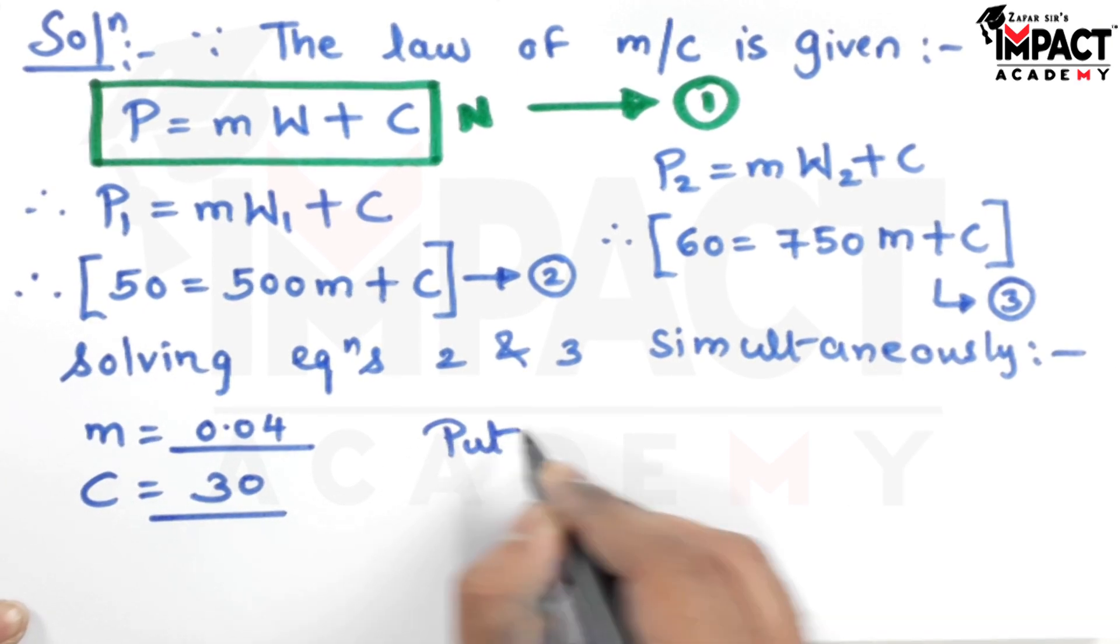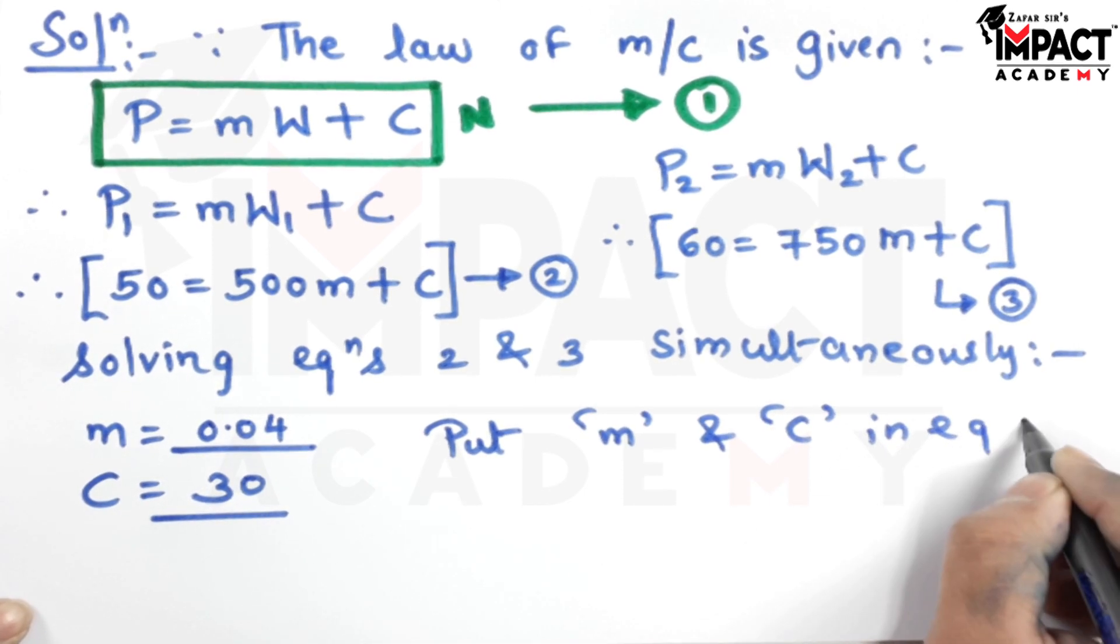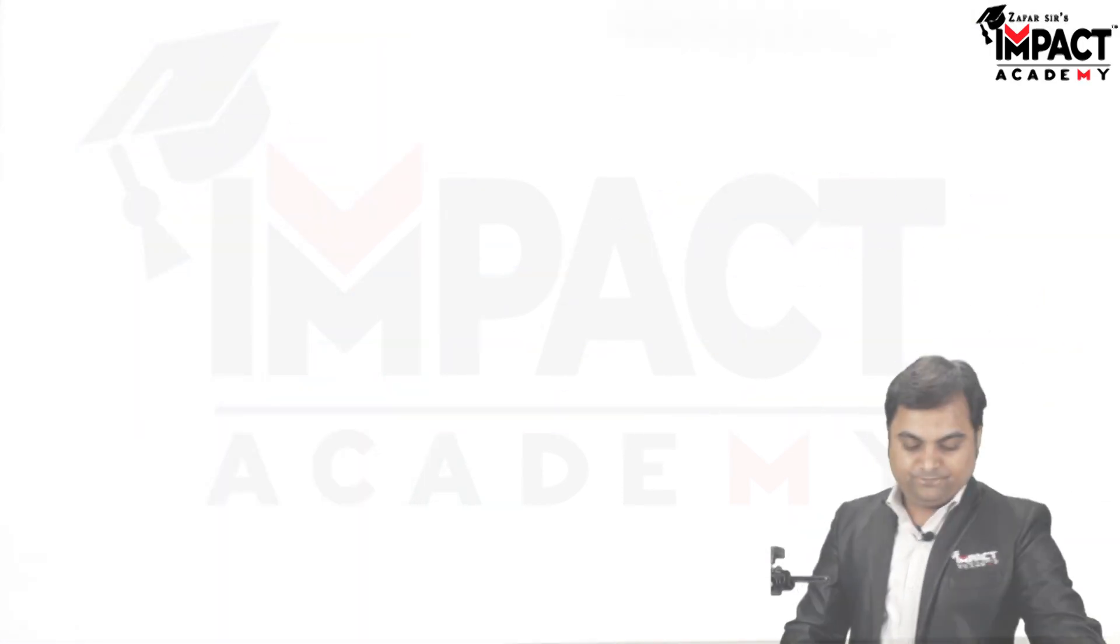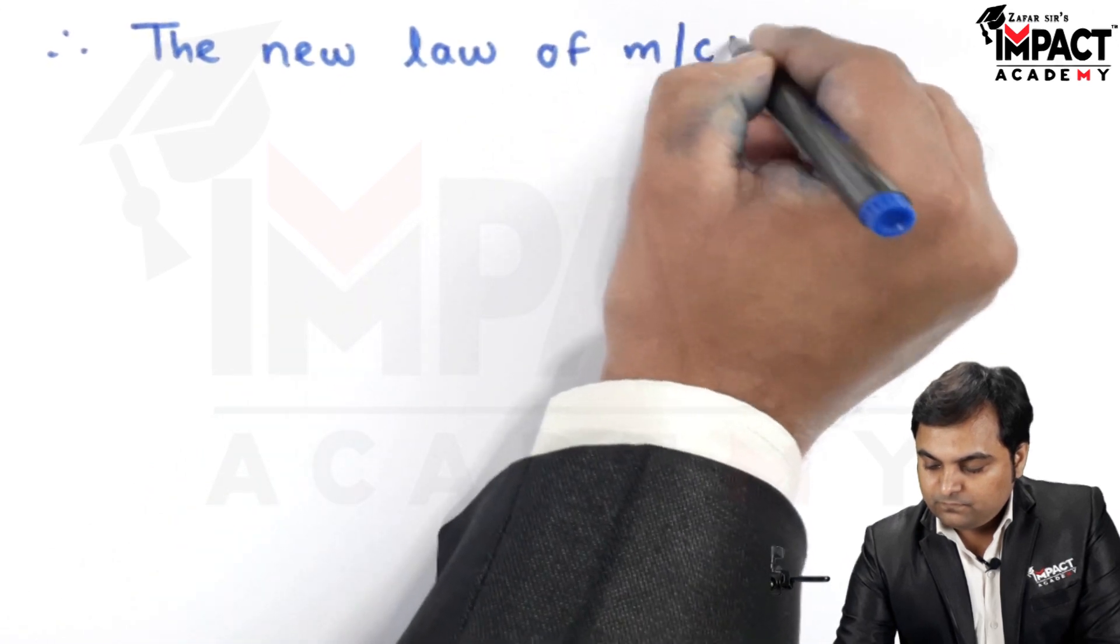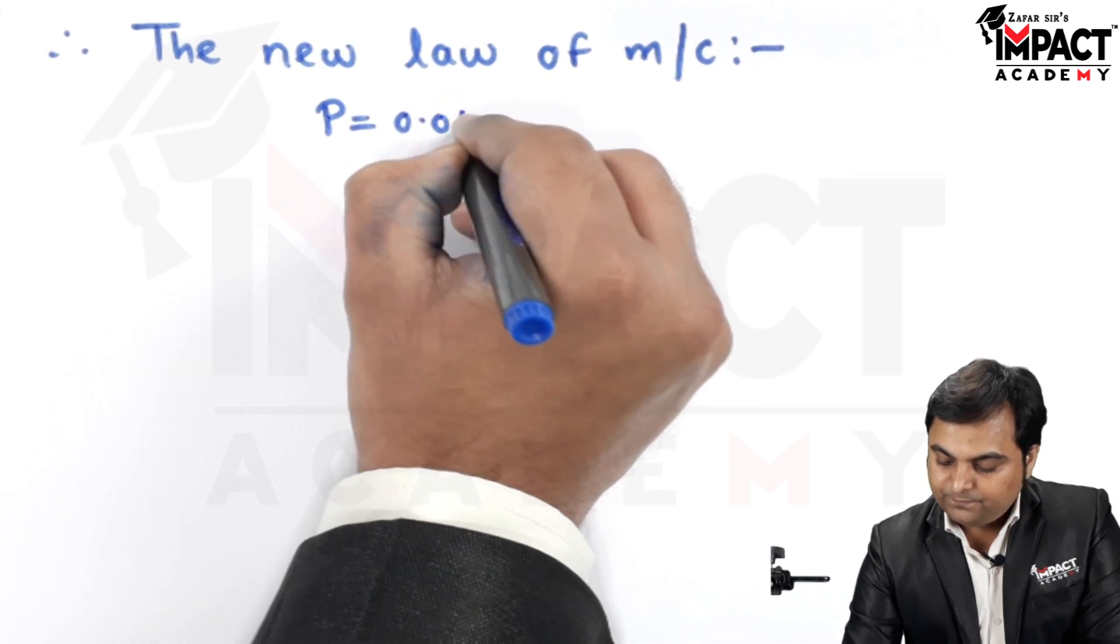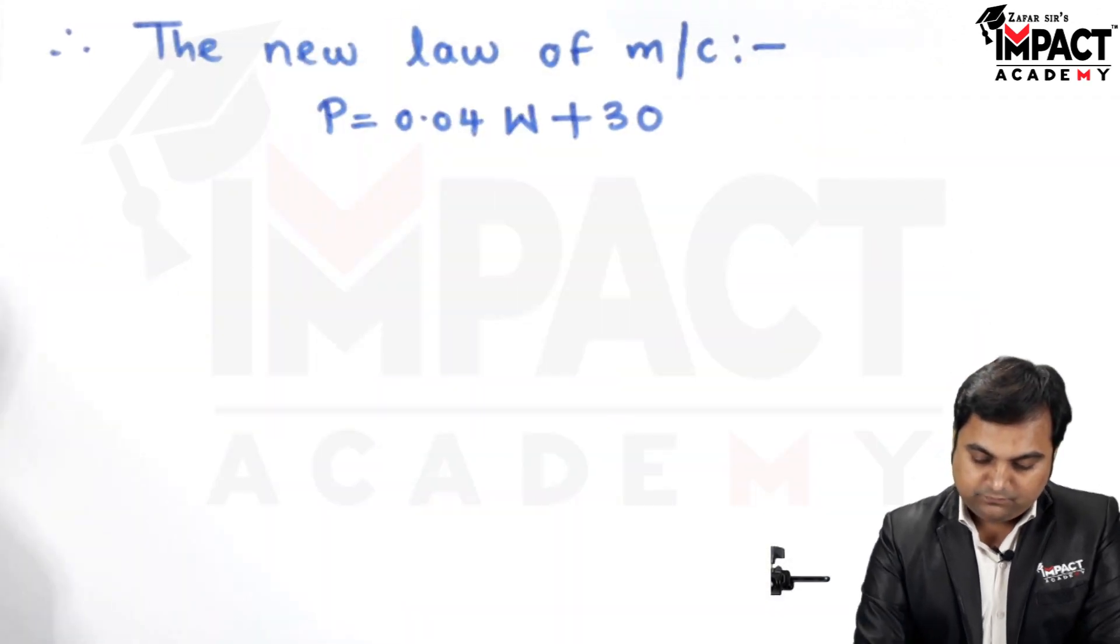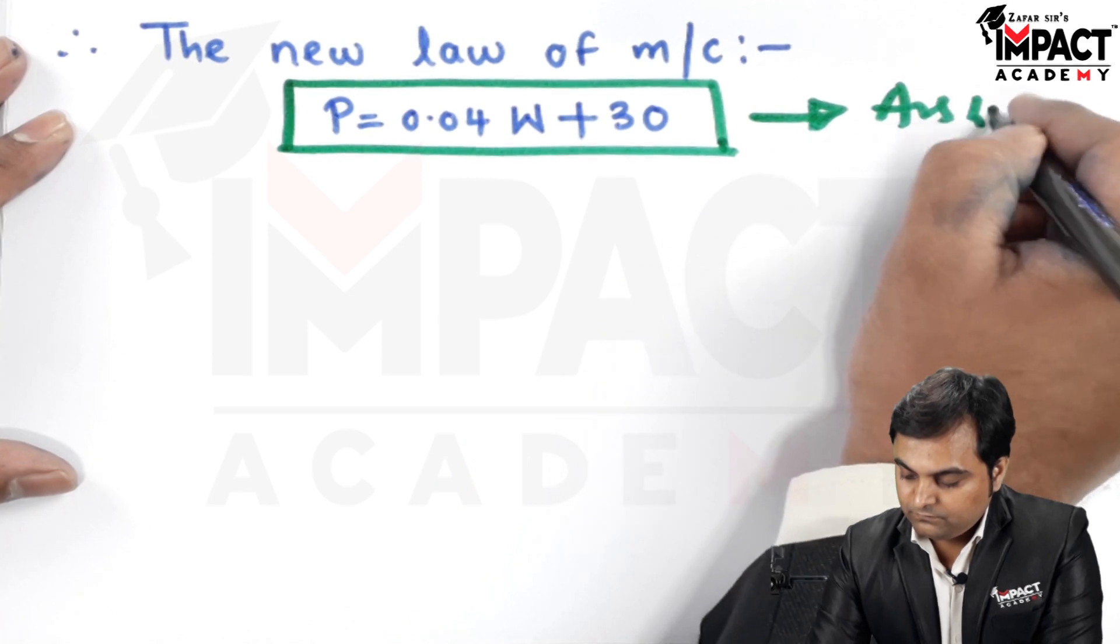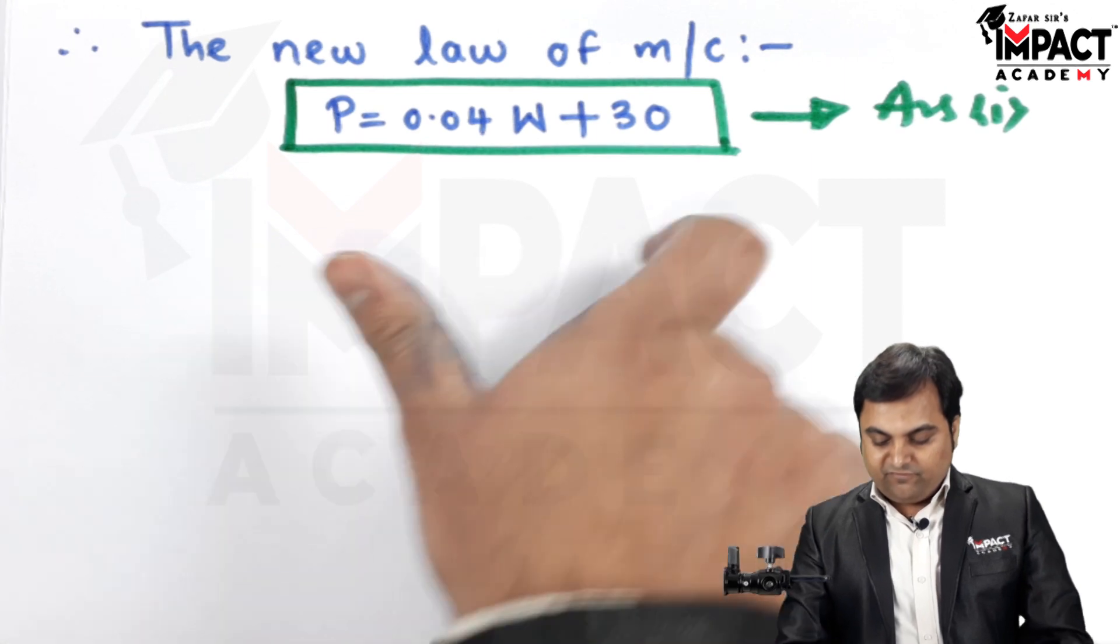Now once M and C values are known, we can get the new law of machine by putting M and C in equation 1. The new law of machine is P equals 0.04 W plus 30. That's the first answer.